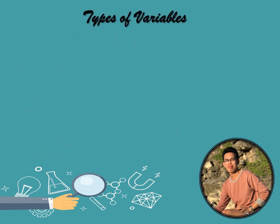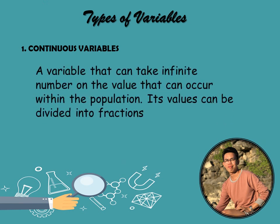Now let us look at the types of variables. The first type is the continuous variable. This is a variable that can take an infinite number of values that can occur within the population. Its values can be divided into fractions; therefore, it can be broken down into fractions or decimals. For example, age — an infant may be three and a half months old.